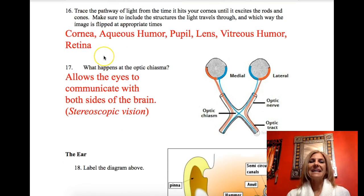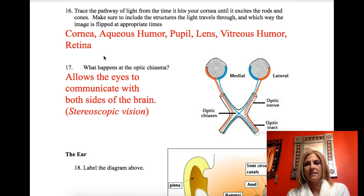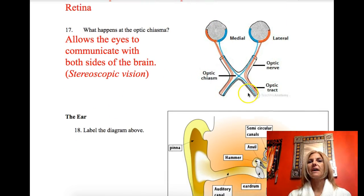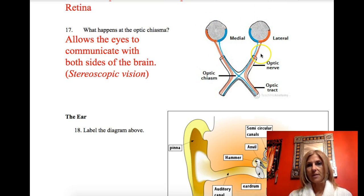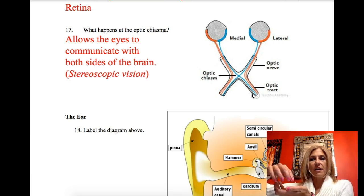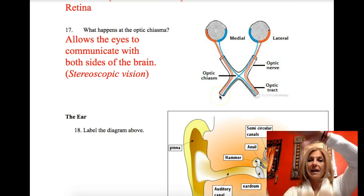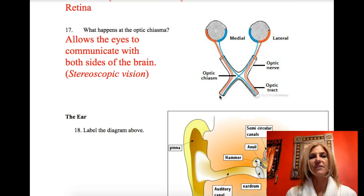Going from outside to inside, light travels through: cornea, aqueous humor, pupil, lens, vitreous humor, and the retina. The optic chiasm allows stereoscopic vision — the medial fibers cross over while the lateral fibers go straight back. This superimposes the picture from the right eye and the picture from the left eye onto one another, giving us a 3D view.